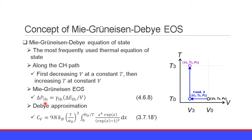Namely, the pressure increase is the thermodynamic Grüneisen parameter times the increase in thermal energy divided by volume V — equation 4.6.8. And this increase of thermal energy is calculated based on the Debye approximation, in which the isochoric heat capacity is expressed by equation 3.7.18 prime.